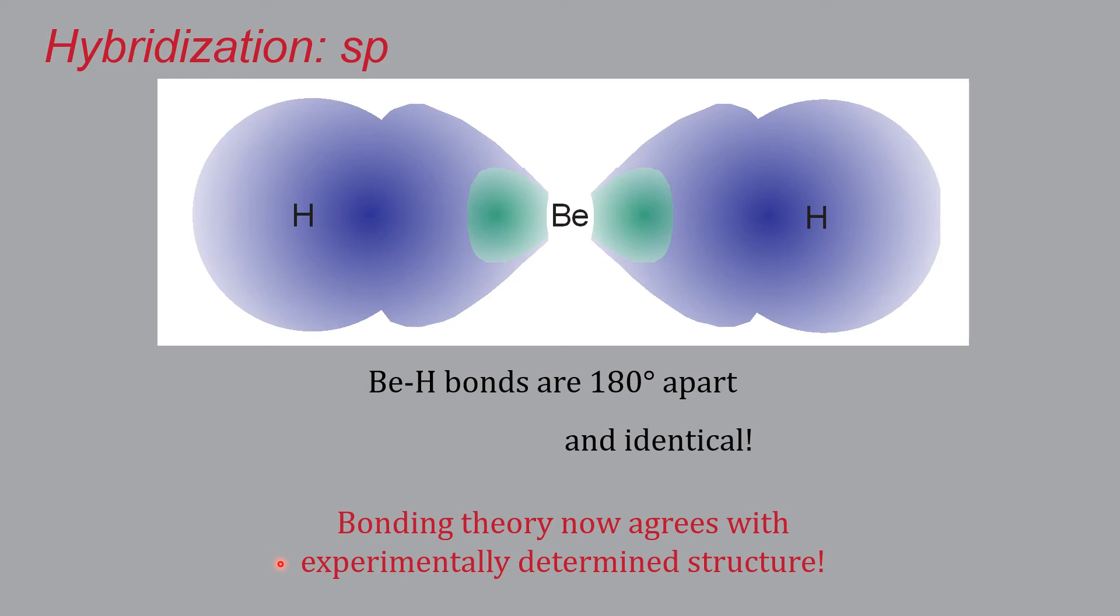And so our bonding theory now agrees with the experimentally determined structures. We had to construct these more elaborate states for the electrons, but we could do it, and this is what hybridization is.